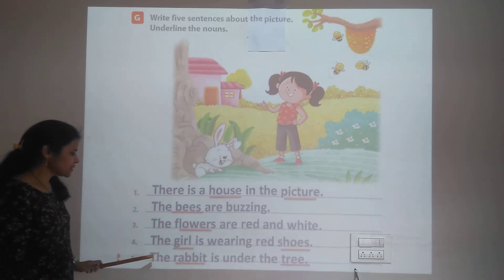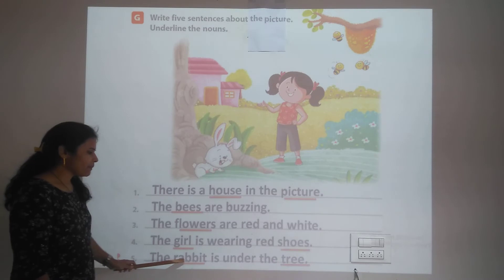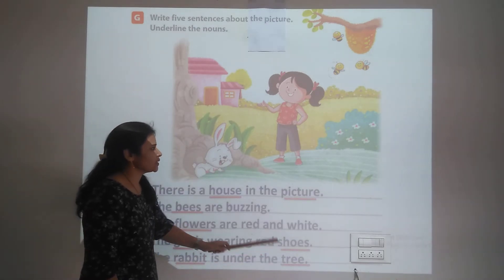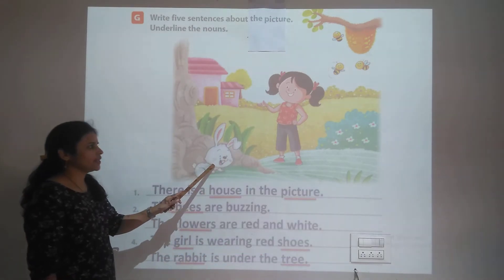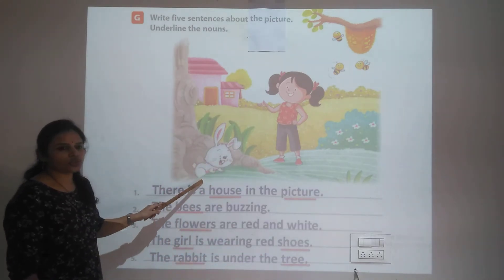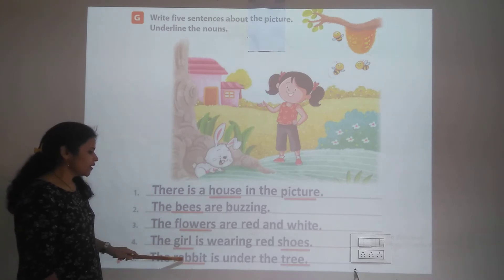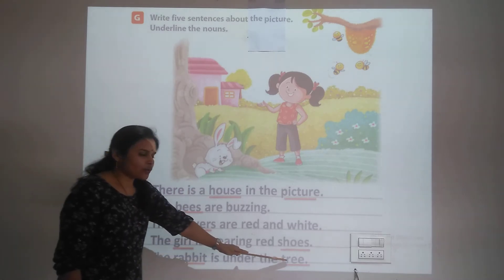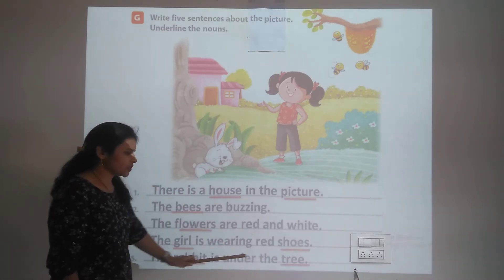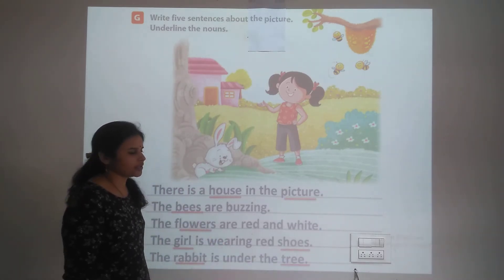Fifth sentence: The rabbit is under the tree. 'Rabbit' and 'tree' are both nouns — underline both.